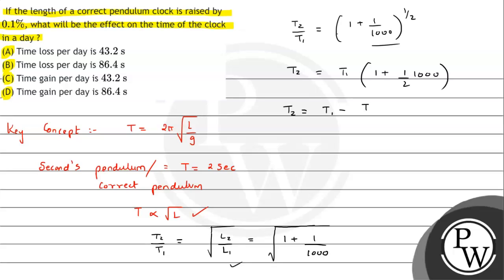T2 minus T1 equals T1 times 1/2000. So the difference T2 - T1 equals T1/2000.